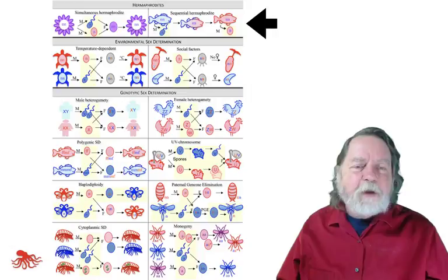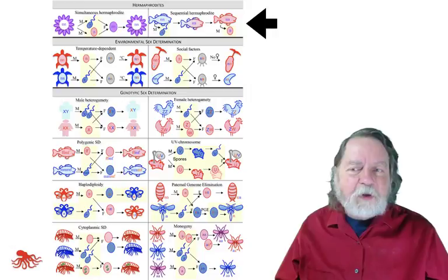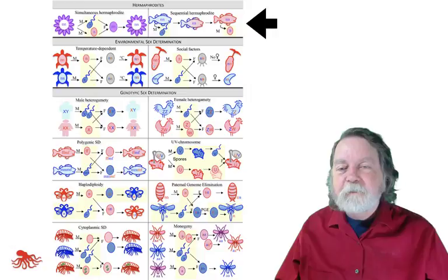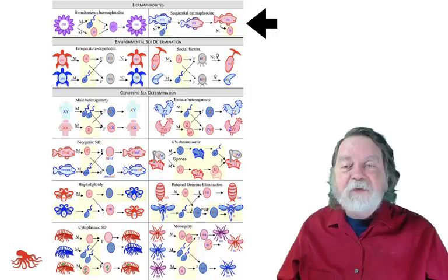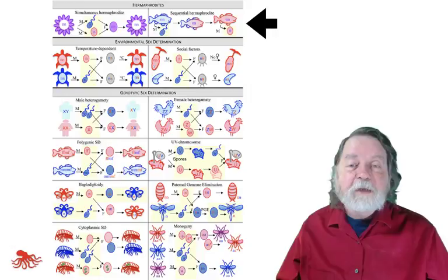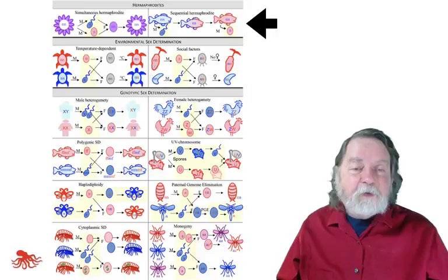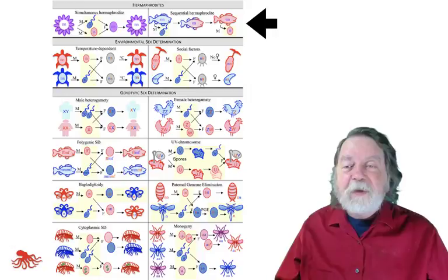Let's start at the top: hermaphrodites. Most flowering plants, as well as gastropods and earthworms, contain both male and female sexual organs at the same time — they are producing both sperm and ova. Other species, like many fish, some gastropods, and some plants, are sequential hermaphrodites. Clownfish, for example — you all know clownfish from Finding Dory — are born males, and they can eventually change into females. There are also other fish species, such as wrasses or gobies, that begin life as females and can later change to males.